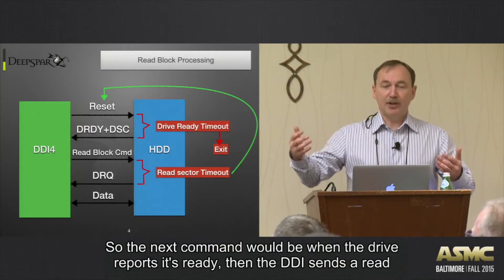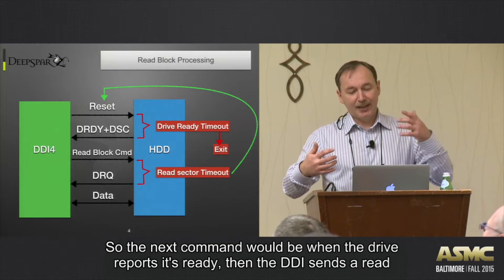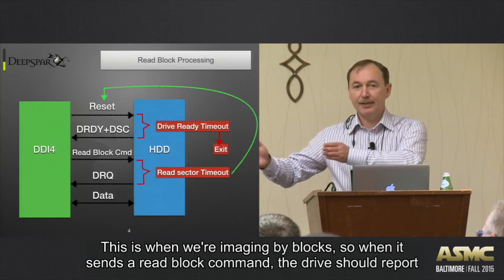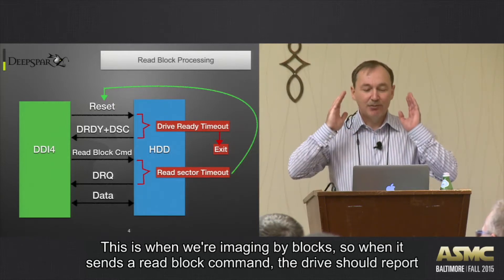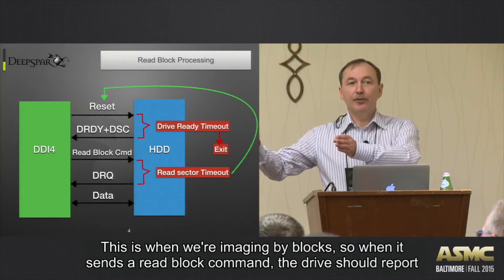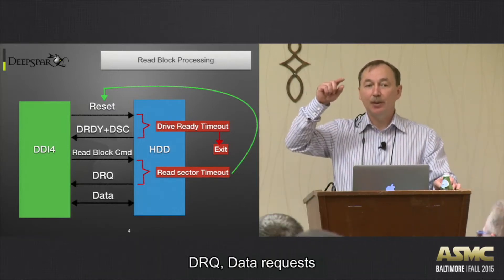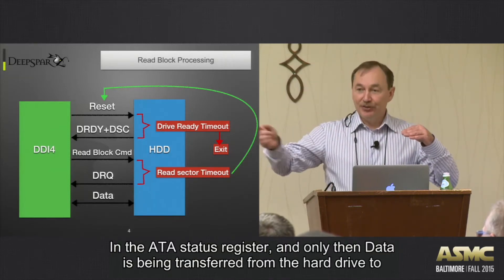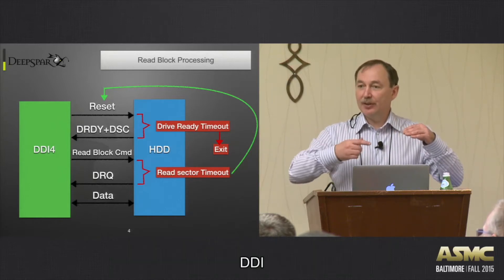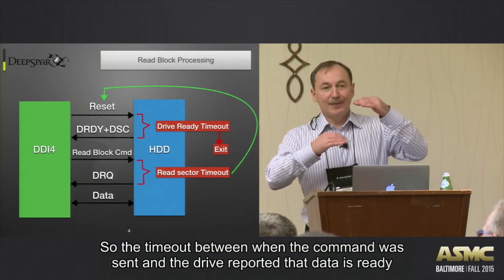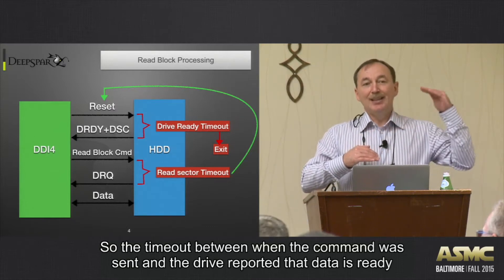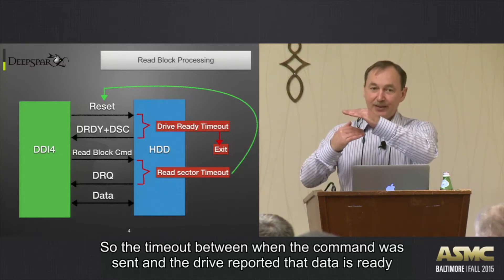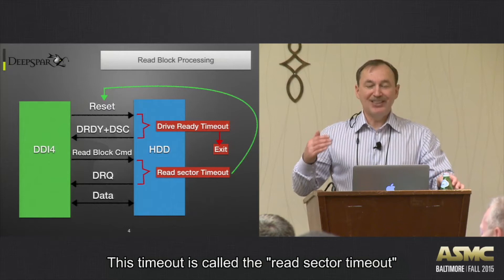Once the drive reports ready, DDI sends the read block command. Every single time a read block command is sent, the drive should report DRQ (data request) in the ATA status register, and only then is data transferred from the hard drive to DDI. The timeout between when the command was sent and when the drive reports the data is ready is called the read sector timeout.